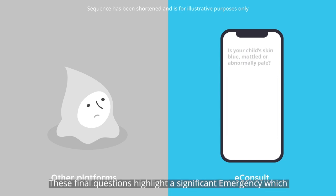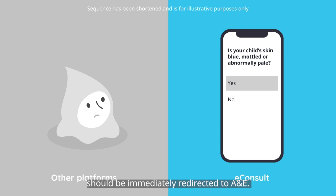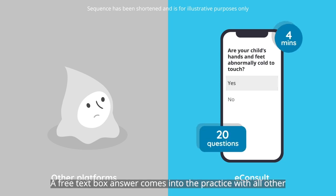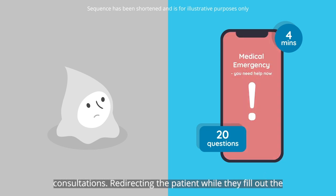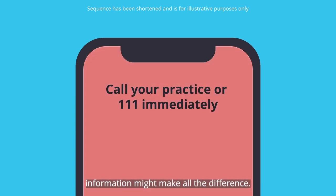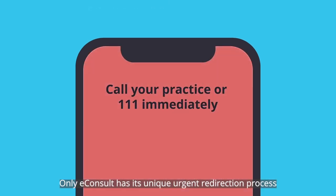These final questions highlight a significant emergency which should be immediately redirected to A&E. A free text box answer comes into the practice with all other consultations. Redirecting the patient while they fill out the information might make all the difference.